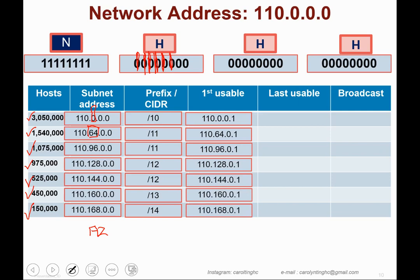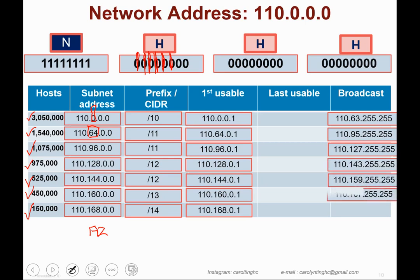Next, we calculate the broadcast address. We need the broadcast address before we can determine the last usable address. The broadcast address is the next subnet address minus one. For the first subnet, the next subnet is 110.64.0.0, so minus one gives a broadcast address of 110.63.255.255. The same steps apply to all subsequent subnets.